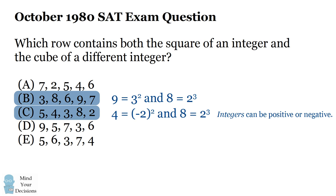So the number four is actually the square of a different integer if you consider negative two squared, and the number eight, which is the integer two cubed. So answer choice C does contain the square of an integer and the cube of a different integer.